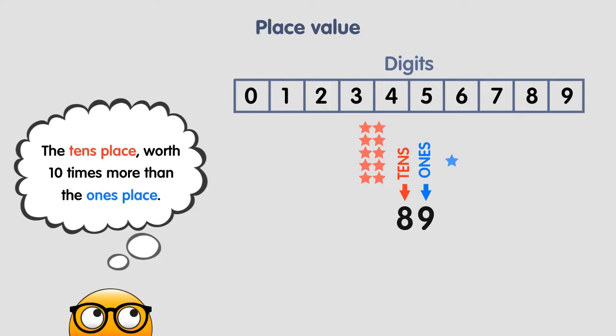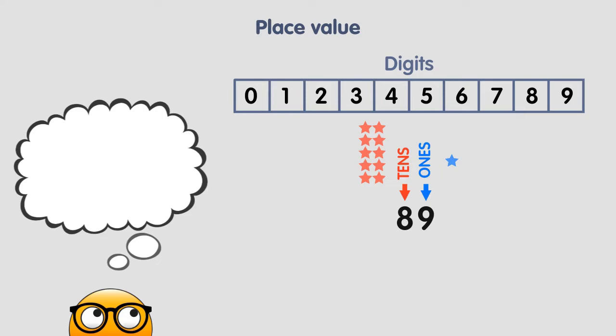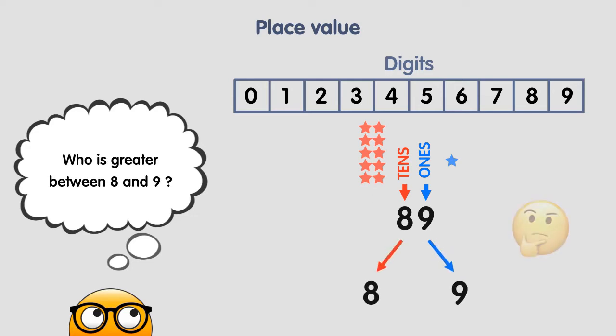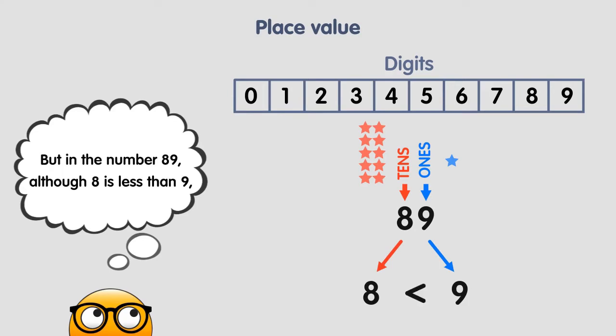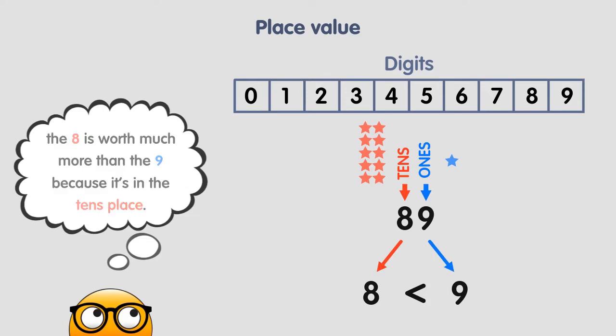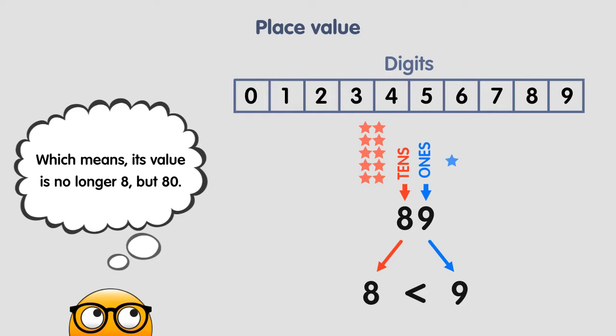The 10's place is worth 10 times more than the 1's place. For example, between 8 and 9, who is greater? The 9 is greater. But in the number 89, even though 8 is less than 9, the 8 is worth much more than the 9 because it's in the 10's place — which means its value is no longer 8, but 80.